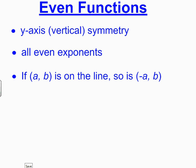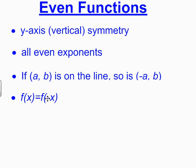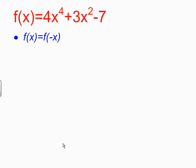So even functions have y-axis symmetry. They have all even exponents on the variables. If a comma b is on the line, then the point negative a comma b is also on the line. And finally, if I substitute a negative x into the function and simplify, I should get back exactly what I started with, f of x. So we're going to test our function f of x equals 4x to the 4th plus 3x squared minus 7 to see if it's an even function using this characteristic.